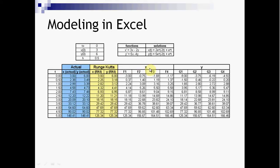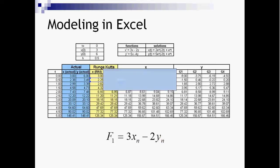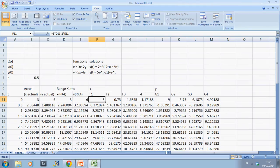So this is a printout of it and I have the Excel spreadsheet done. f1 is simply the function — 3x minus 2y. Let's have a look at that: f1 is 3x minus 2y.